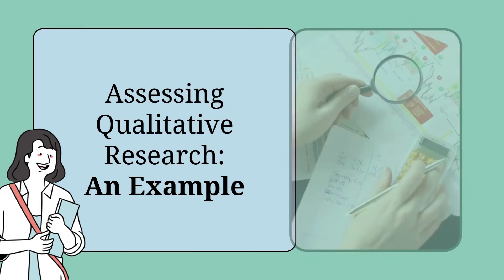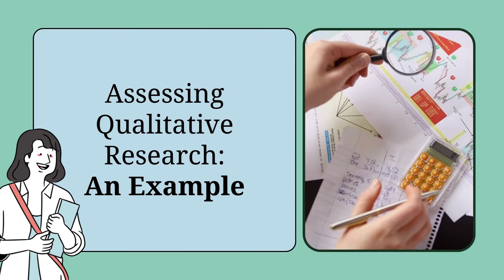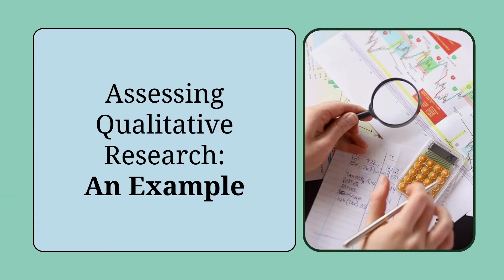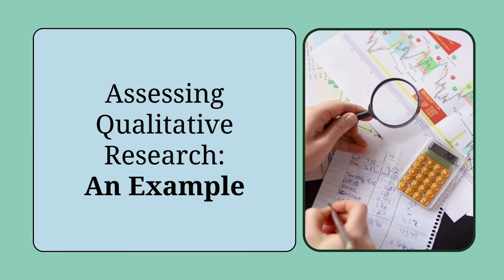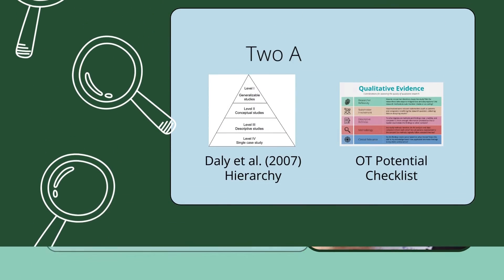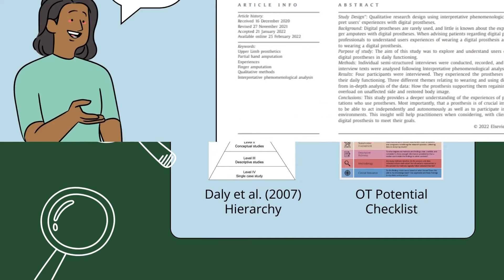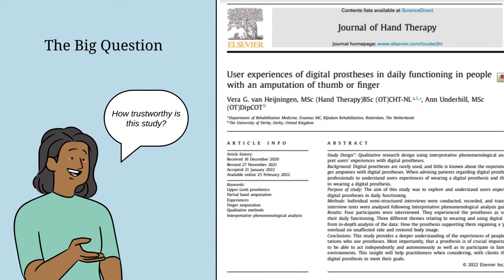Welcome. I'm Alana Woolley, an OTB student, with an example of appraising a qualitative research study for its relevance to occupational therapy practice. We're going to be assessing this research using both a hierarchical model and a checklist model to help us determine how much weight to give to the findings of this study.